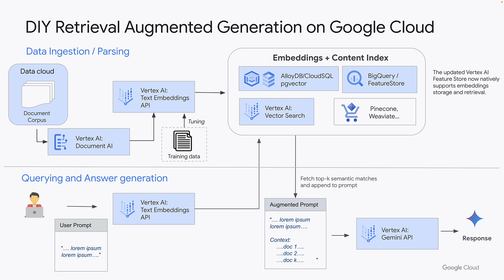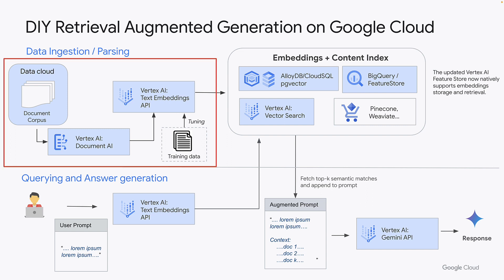Here's an example of a simple RAG architecture. On the data ingestion side, you can use Document AI to parse your documents, or you could use LangChain parsers or something else. Then you can use the embeddings API — on Google Cloud you can also fine-tune the embeddings API to adapt it to your data.